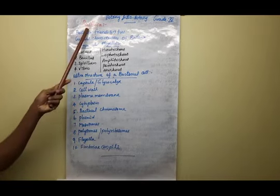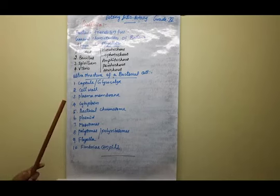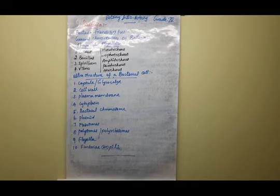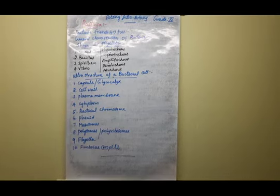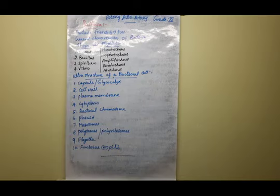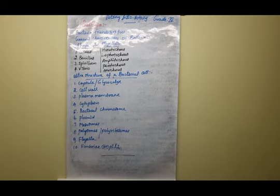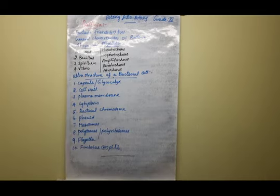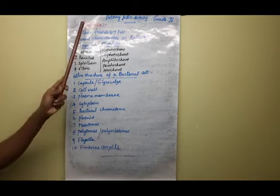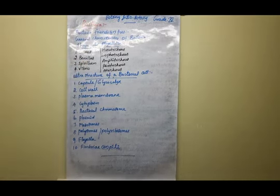Next we are going to learn about what is meant by bacteria. Bacteria are microscopic organisms — very very minute organisms — unicellular in nature. Bacteria are mostly prokaryotic organisms. They are ubiquitous — meaning they are present everywhere. Bacteriology means the study of bacteria.